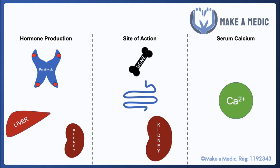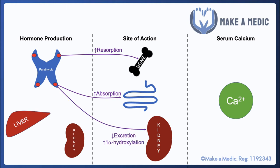Parathyroid hormone is produced by the parathyroid glands, which can be found embedded at the corners of the thyroid gland. Once secreted, parathyroid hormone will increase the resorption of bone and hence liberate calcium from these stores. In addition, it has an action on the gastrointestinal tract and increases the absorption of calcium from our diet. In the kidneys, it leads to a decrease in calcium excretion in the urine and also an increase in 1-alpha hydroxylation, which is a key step in the activation of vitamin D. All of these measures result in an increase in serum calcium concentration.